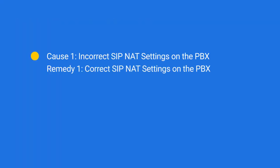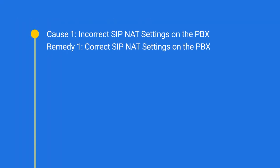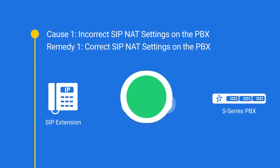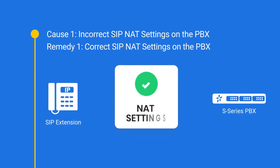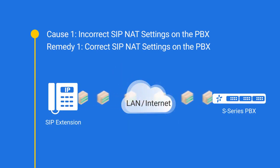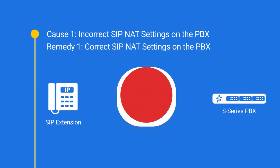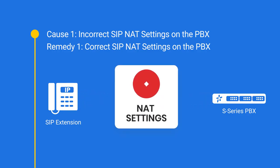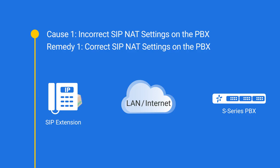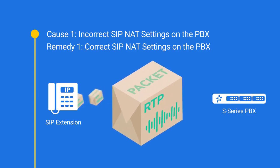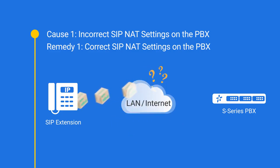First, let's talk about SIP NAT settings. It is a feature that makes sure the SIP extension can send SIP packets to the PBX successfully via LAN and the internet. If not configured correctly, the SIP extension won't know where to send the RTP packets — a type of SIP packet which carries the voice stream — so the problem happens.